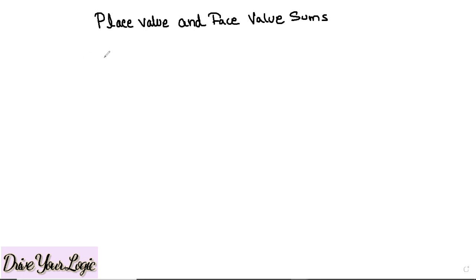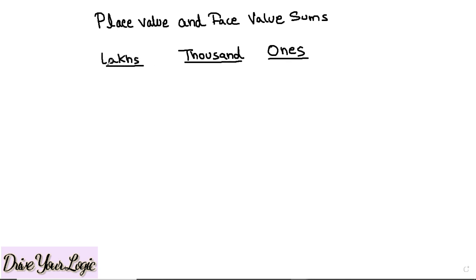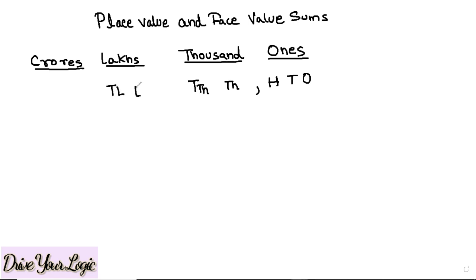So what is the Indian system of numeration? They are written in this way. These are the periods: ones — which includes ones, tens, and hundreds — then a comma, then the thousands period, then ten-thousands (TTH), then lakhs (TL, L), and then crores (TC, C). This is the Indian system of numeration.